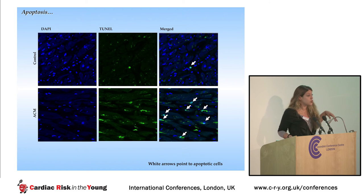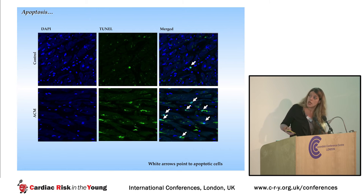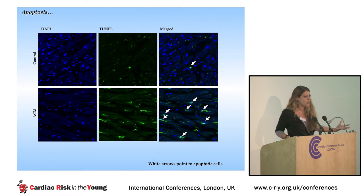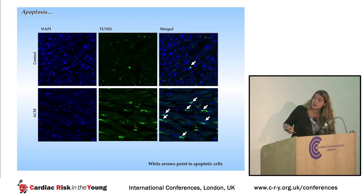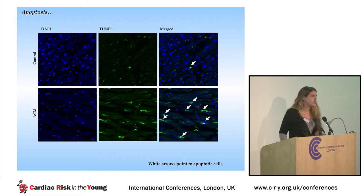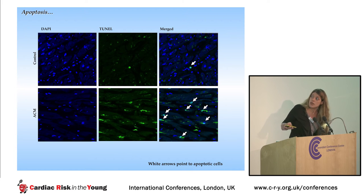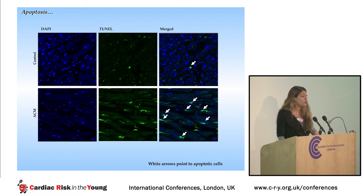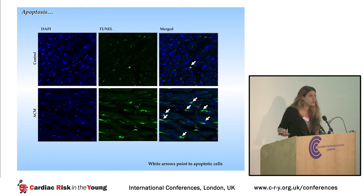The third feature we identified was a high level of cardiac myocyte apoptosis. Blue marks the nuclei, and green is a marker for DNA fragmentation. When we superimpose the two pictures, a white dot shows which cells are actually undergoing apoptosis. This was a feature of arrhythmogenic cardiomyopathy shown by pathologists a long time ago, but we were able to confirm this finding using molecular techniques like TUNEL assays.